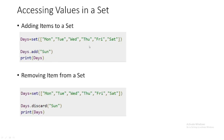To add an item to a set, use the dot add() method. For example, days.add('Sunday') will add Sunday to the set. To remove an item from a set, use the dot discard() method — write the set name followed by .discard('element') and it will remove that element. So for adding, use .add(), and for removing, use .discard().